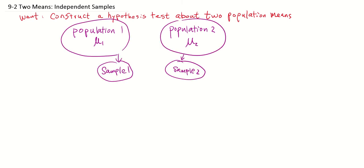We'll pick a sample from each population. When the two samples are randomly selected and independent to each other, we call these two samples independent samples.